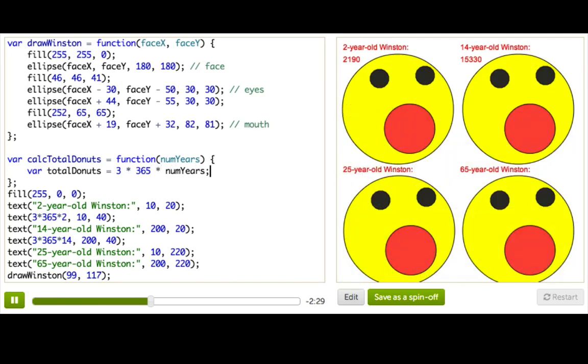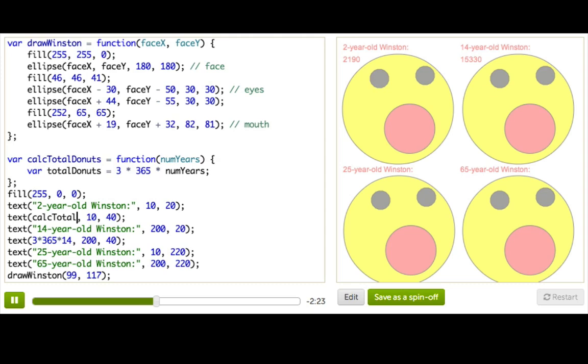So it'll be three times 365 times num years. All right, so now that we have that function, I'm going to replace this expression here with calcTotalDonuts, the call to the function, and passing in two.